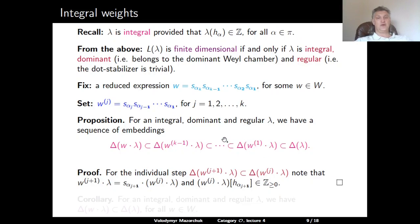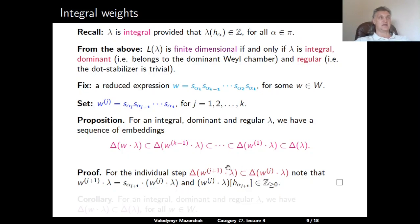To prove this, it suffices to prove each individual step: that Δ(w_{j+1} · λ) is a submodule of Δ(w_j · λ). At each step, w_{j+1} · λ is obtained from w_j · λ by the simple reflection s_{α_{j+1}}, and the evaluation of w_j · λ at H_{α_{j+1}} is a non-negative integer. We can use the result from previous lectures that this condition guarantees a non-zero — hence injective — homomorphism, giving a Verma submodule.